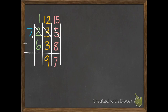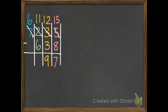Now we subtract our hundreds: 1 hundred subtract 6 hundreds — can't do it again, we have to borrow. Luckily we have such nice neighbors. Our 7 is going to give us 1 of its thousands, which turns into 10 hundreds. Plus we had 1, so we have 11 hundreds. 11 subtract 6 is 5 hundreds. Then 6 thousand subtract 0 thousands is 6 thousand.